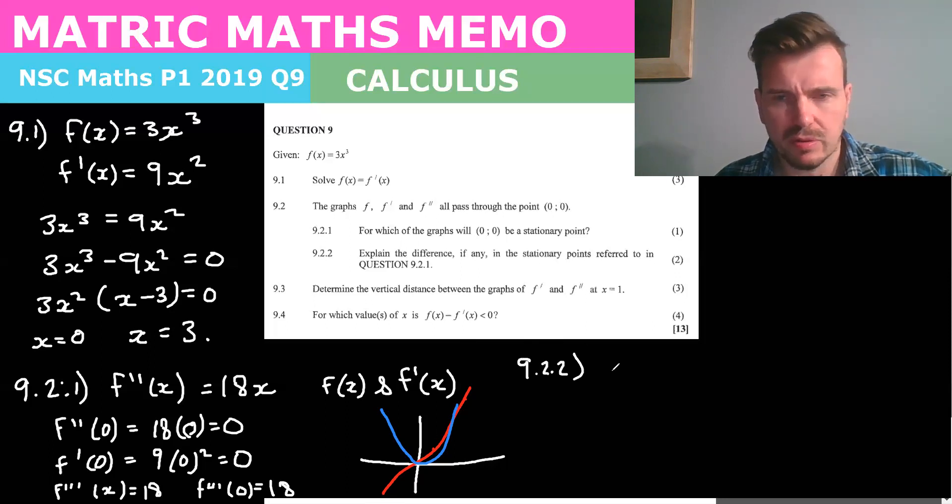So 9.2.2 we can say that for f of x the stationary point which is at zero is not a max or min.